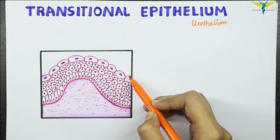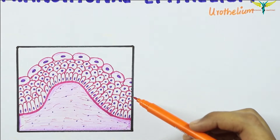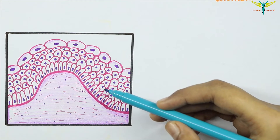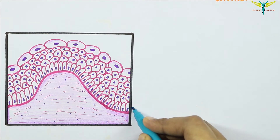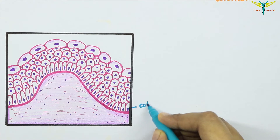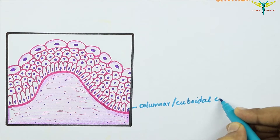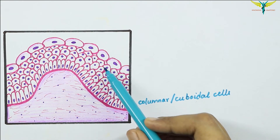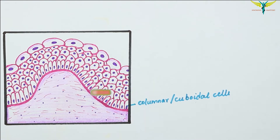You can see the stratification of the layers. The deepest cells are columnar or cuboidal in shape — as you can see, these are the columnar or cuboidal cells making up the deepest layer.